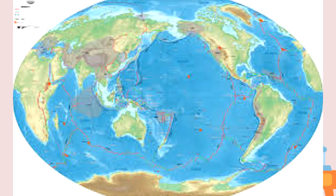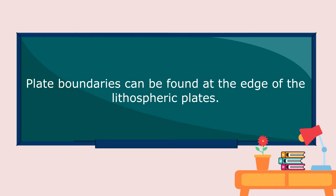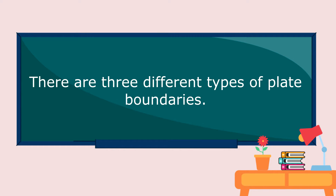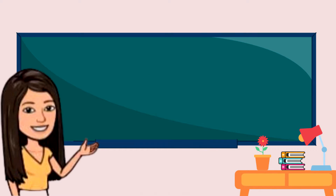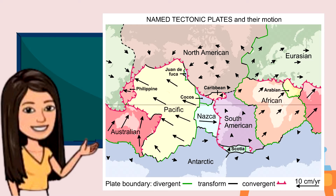It is very important to learn about plate boundaries because there are geologic occurrences or events happening at them. Plate boundaries can be found at the edge of the lithospheric plates. There are three different types of plate boundaries, and we can differentiate them by their types of movement. Let us take a look at the relative movement of the crustal plates.